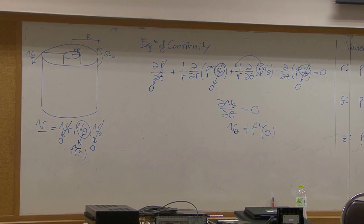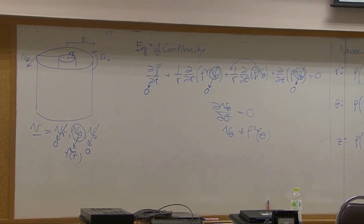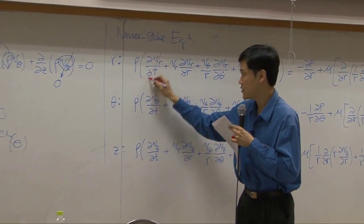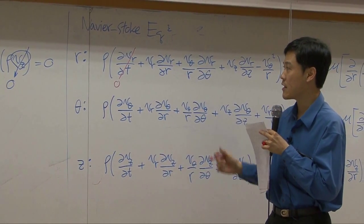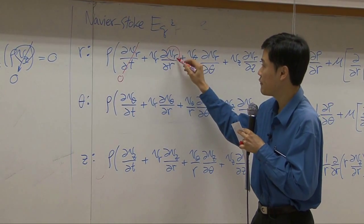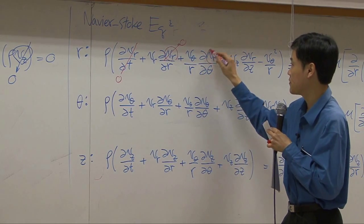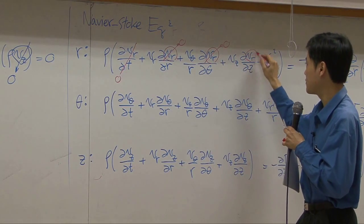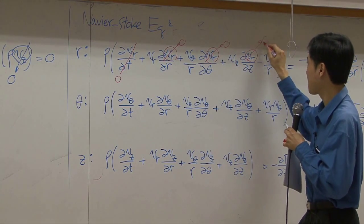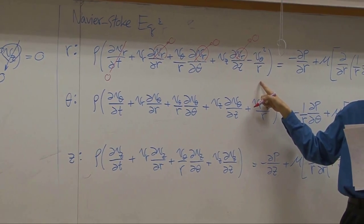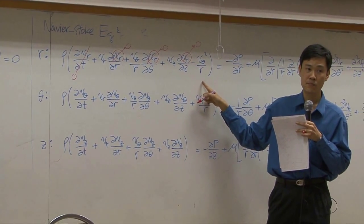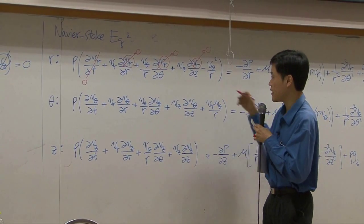You can write down the three components of the Navier-Stokes equation. The first component is in R. The first term is dropped simply because of the steady state assumption. Then Vr is zero here as well. Can we drop this term? No, so this term must be kept.